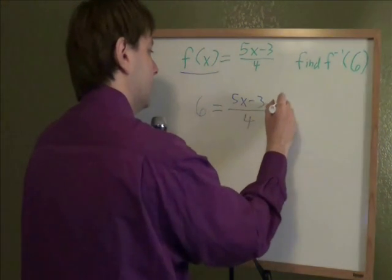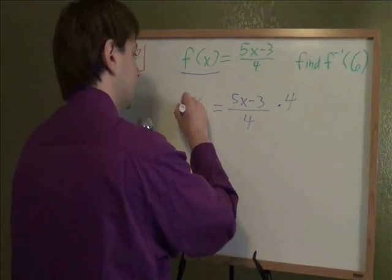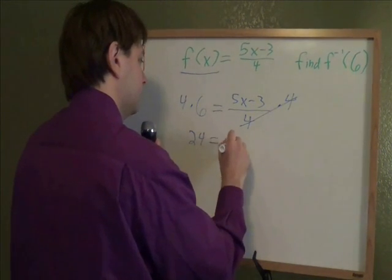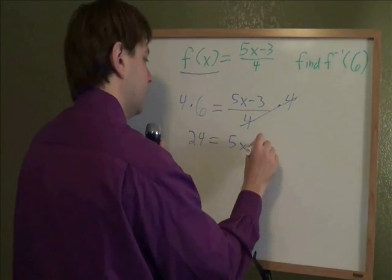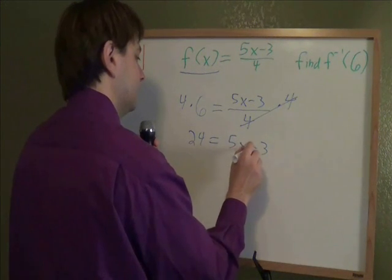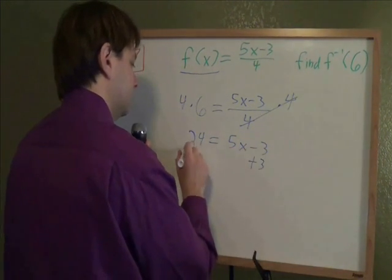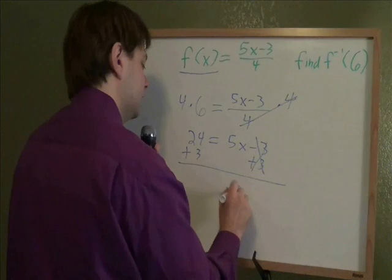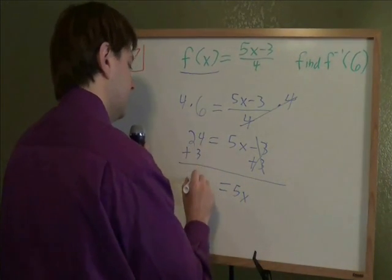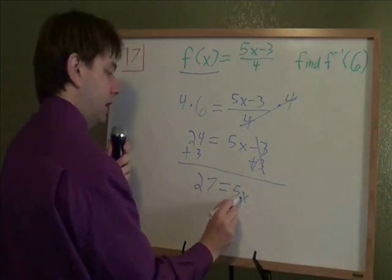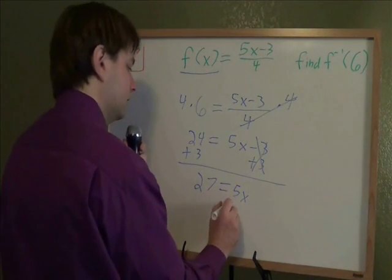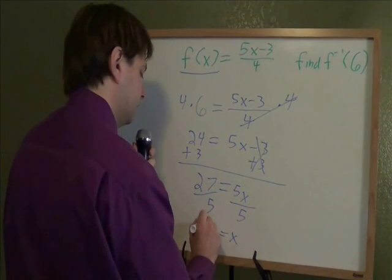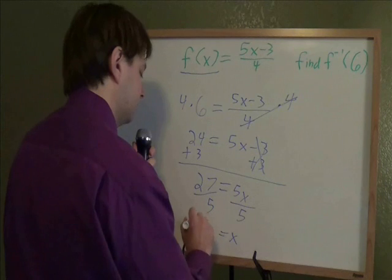4s cancel. 4 times 6 is 24, which equals 5x minus 3. We need to get x by itself. Next step is to add 3 to get rid of a minus 3. Minus 3 and plus 3 cancel. We have 5x on the right side. 24 plus 3 is 27. Last step in getting x by itself, we need to get rid of this times 5, so we divide by 5. And x equals the fraction 27 fifths. Nothing wrong with the fraction answer.